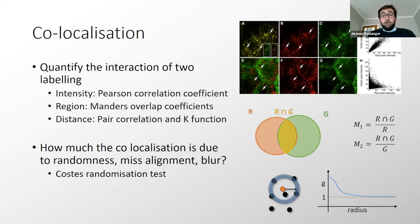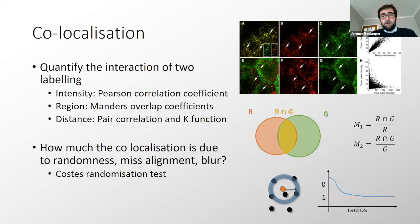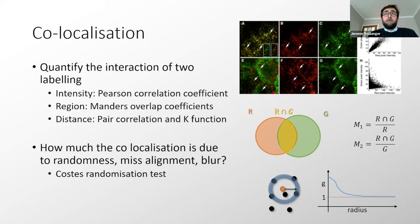Once objects are segmented (or not), you can perform co-localization analysis. Based on intensity, use Spearman or Pearson correlation coefficients. Once you have regions, compute the overlap coefficient related to the Manders coefficient. For sub-diffractive objects, measure pair correlation and K functions based on distances between objects. An important question is how much co-localization is due to randomness or misalignment — you can test this using a cost randomization test or more recent approaches that don't rely on simulation.